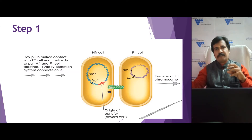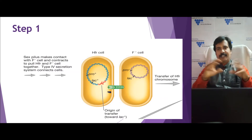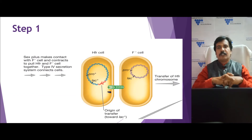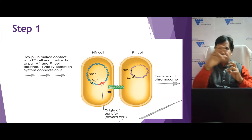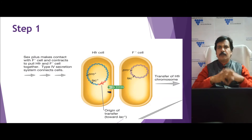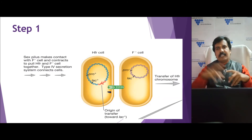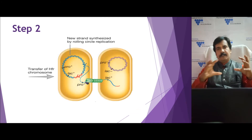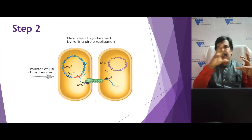The pili form contact with an F minus strain, establishing a connection, then retract close to the HFR cell. In the HFR cell chromosome, there is a red-colored region denoting the origin of transfer — where transfer is initiated. The HFR cell also carries two major genes: lac plus and pro plus, whereas the F minus cell does not contain these genes — it is lac minus and pro minus.